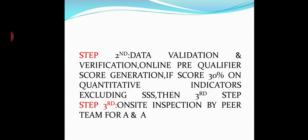Step 2 is data validation and verification, that is DVV. DVV is possible only if in step 1, after submitting SSR, the students participate in SSS — that is Student Satisfaction Survey. If the second step, DVV, passes — that is the institution pre-qualifies by getting 30% of total marks, i.e. if there are 1000 marks then 300 must be secured — then the third step is processed, that is on-site visit by the NAAC peer team.